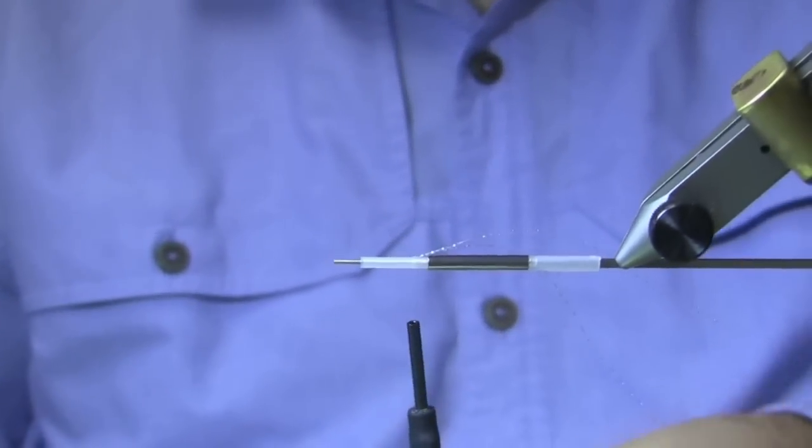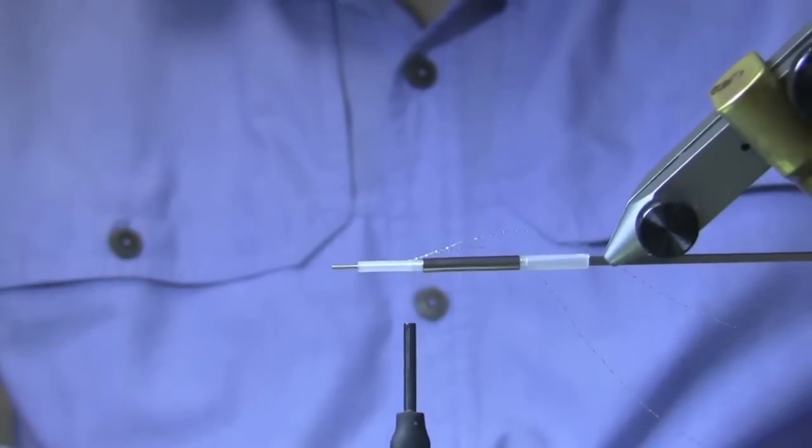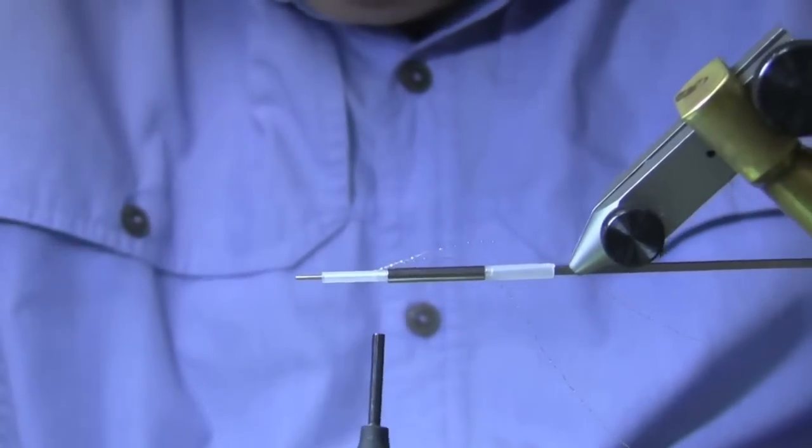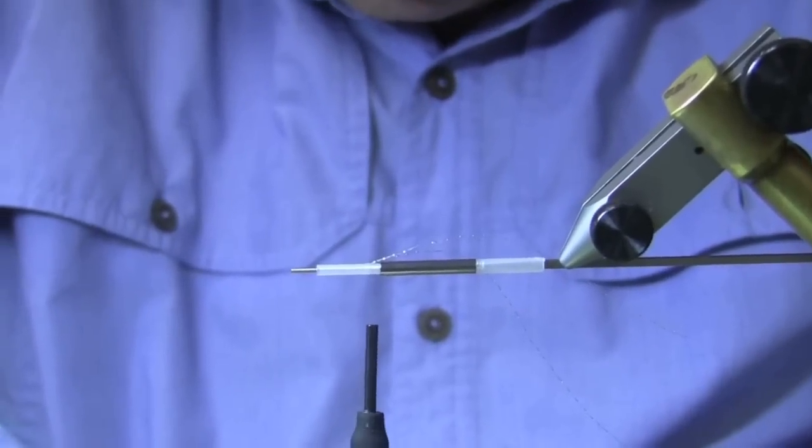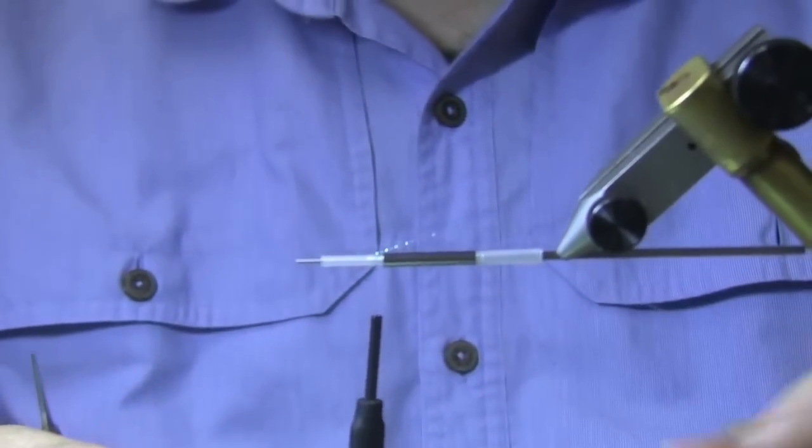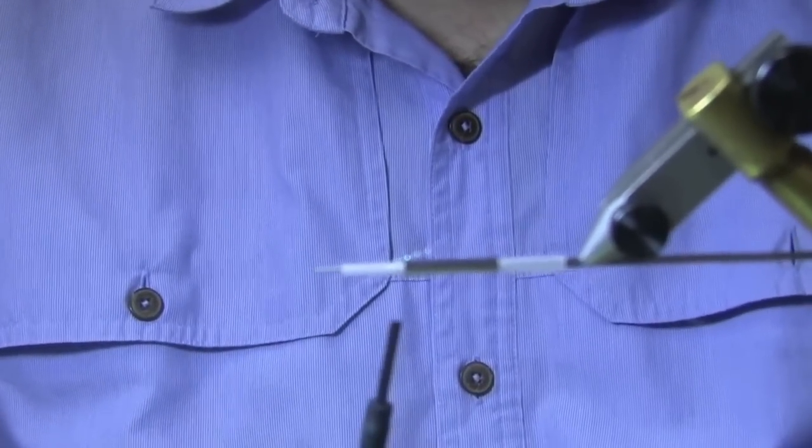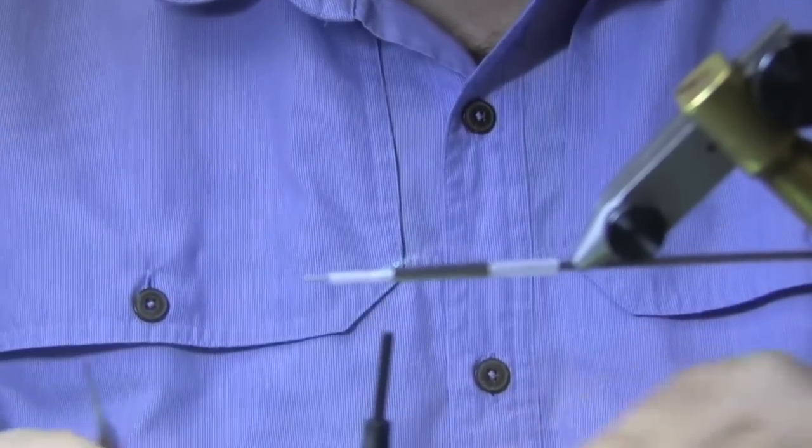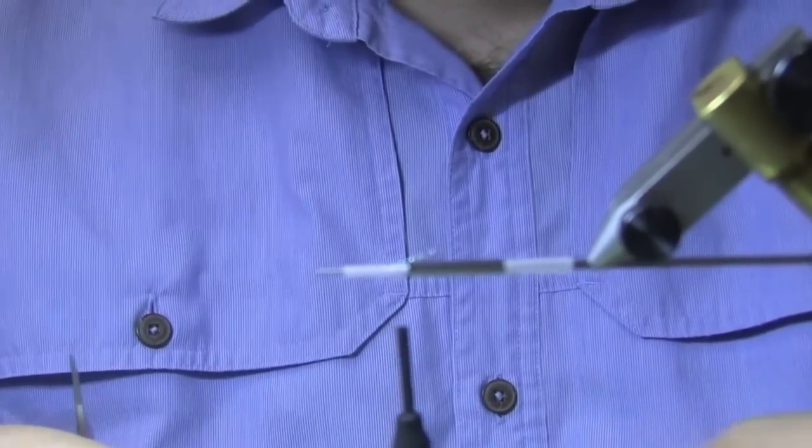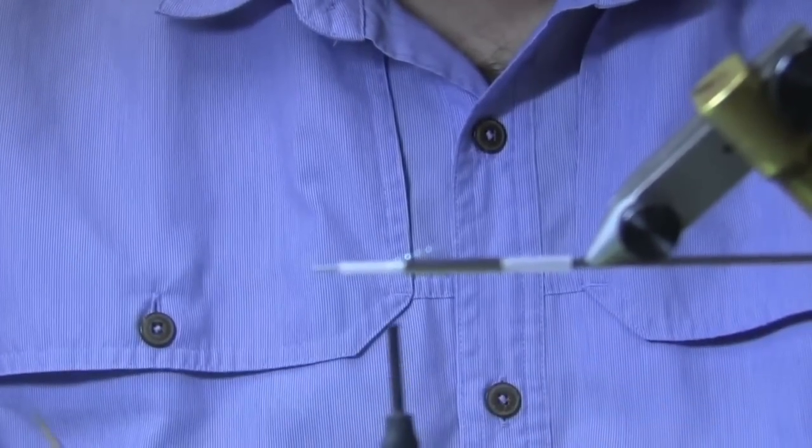White bucktail. Bucktail, when you're choosing bucktail, try to find the finer stuff that doesn't have a lot of thick base to it. The finer stuff is going to sink a little better and it's not going to flare as much.